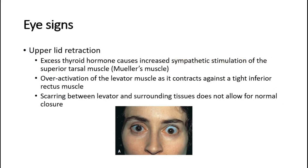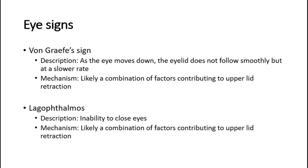Looking at the eye signs in Graves' ophthalmopathy: upper lid retraction occurs due to excess thyroid hormone causing increased sympathetic stimulation of the superior tarsal muscle, also called Mueller's muscle. Overactivation of the levator muscle as it contracts against a tight inferior rectus muscle, and scarring between the levator and surrounding tissues, do not allow normal closure of the eyelid. Von Graefe's sign is when the eye moves down but the eyelid does not follow smoothly, moving at a slower rate. Lagophthalmos is the inability to close the eyes, with a mechanism likely due to a combination of factors contributing to upper lid retraction.